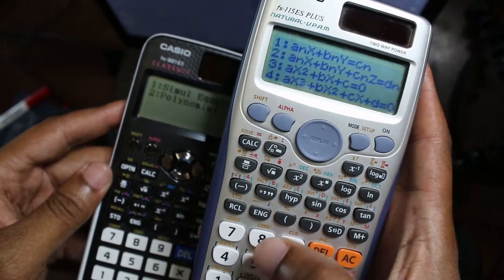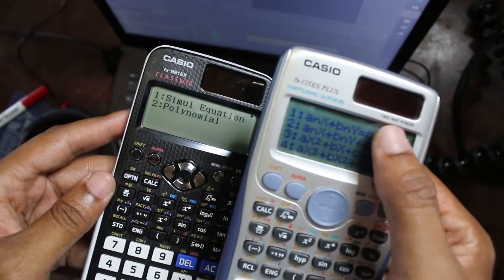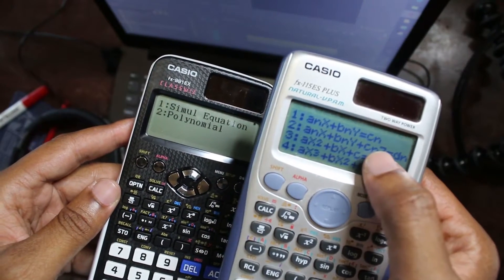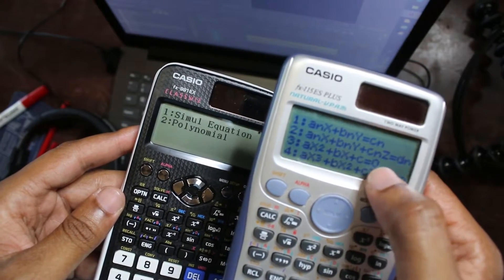I'm seeing five equations and the first two are simultaneous equations. This one has two variables, this one has three variables. You see the z there. And here we have the quadratic ax squared plus bx plus c.